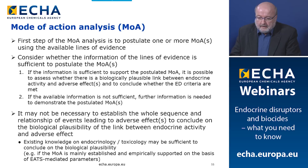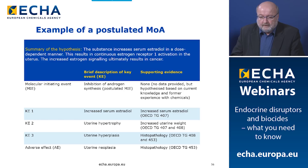Here is an example of a postulated mode of action: a substance increases serum estradiol in a dose-dependent manner, resulting in continuous estrogen receptor 1 activation in the uterus, and the increased estrogen signaling ultimately results in cancer. The table shows the different events along with their empirical and supporting evidence — presenting the mode of action in a structured and simple manner.